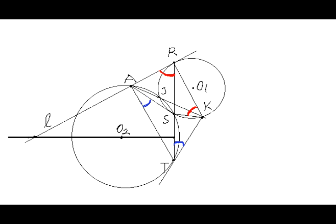Analogously, to prove that KT is tangent to circle gamma at point T, it suffices to prove that angle KTS is equal to angle SAT inscribed in circle gamma and subtended by the common chord TS. These two angles are highlighted by blue arcs. It will be our dream throughout the solution of this problem to prove the equality of these two blue angles, like in the song Somewhere Over the Rainbow, Bluebirds Fly.